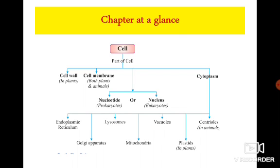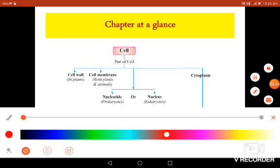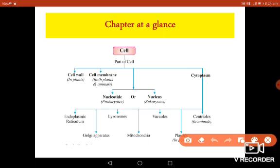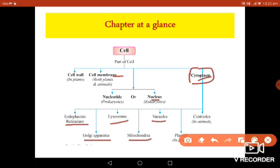First we will see what is the cell. The cell has many parts. The main three parts observed in almost any type of cell are the cell membrane, the nucleus, and the cytoplasm. Inside the cytoplasm there are many different organelles which work together to help the cell perform its activities smoothly. Those organelles are the endoplasmic reticulum, Golgi apparatus, lysosome, mitochondria, vacuoles, centrioles, and plastids.